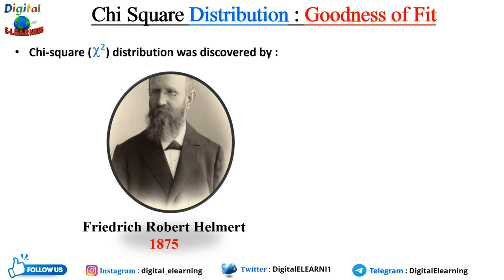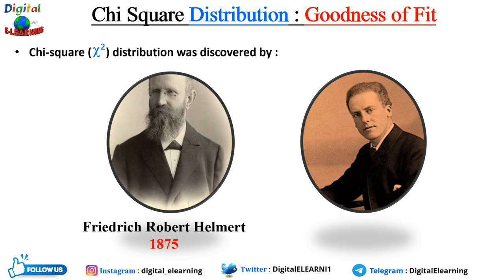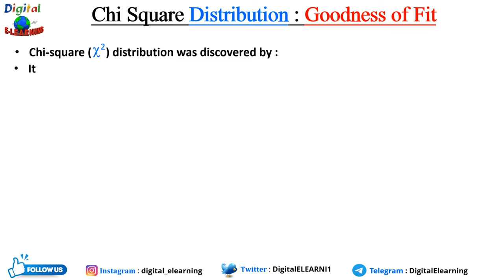Helmert computed the sampling distribution of the sample variance of a normal population. Later, it was further developed by Carl Pearson in 1900. So, what is chi-square distribution?